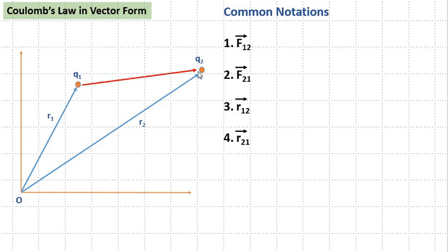Here in the diagram there are two charges q1 and q2 at rest and they are at a distance of r1 and r2 from the origin of the coordinate system.